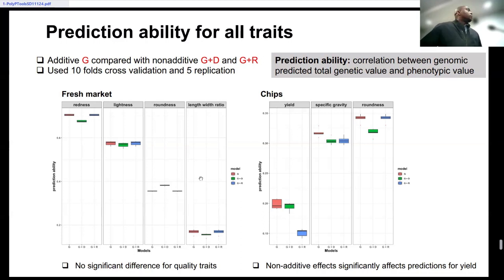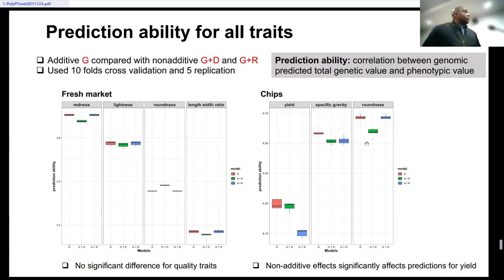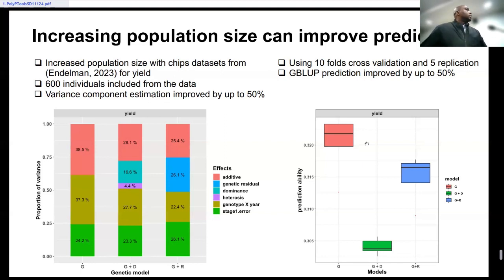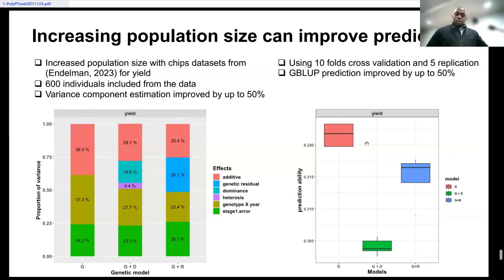One of the factors affecting prediction may be population size. We used data from an ENMA trial in 2023 for yield, including about 600 individuals in those datasets. We could see the variance components estimated earlier improved by up to 50%, and prediction also improved by up to 50%. So I think optimizing the training population size helps a lot in making better predictions for these traits.